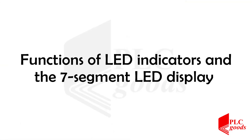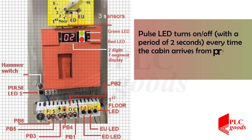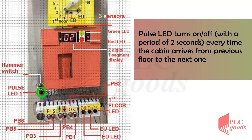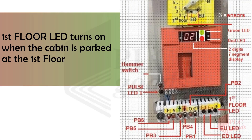Functions of LED indicators and the 7-segment LED display: The pulse LED turns on or off with a period of 2 seconds every time the cabin arrives from a previous floor to the next one. The first floor LED turns on when the cabin is parked at the first floor.